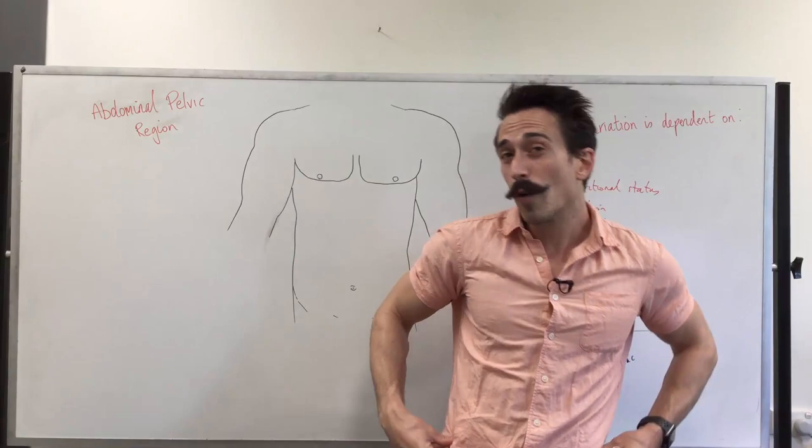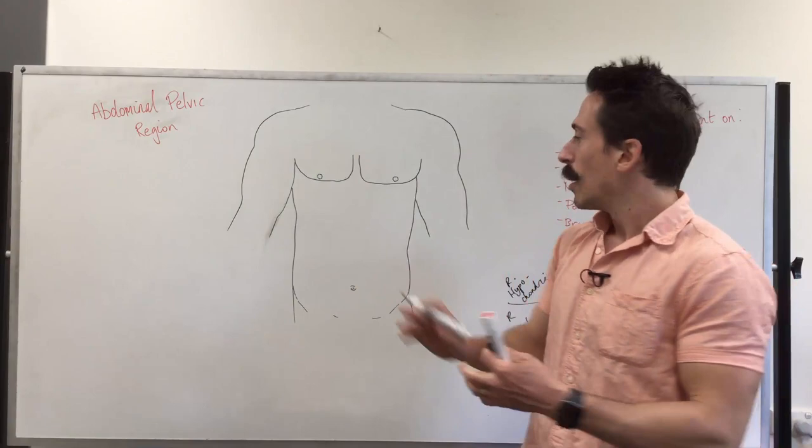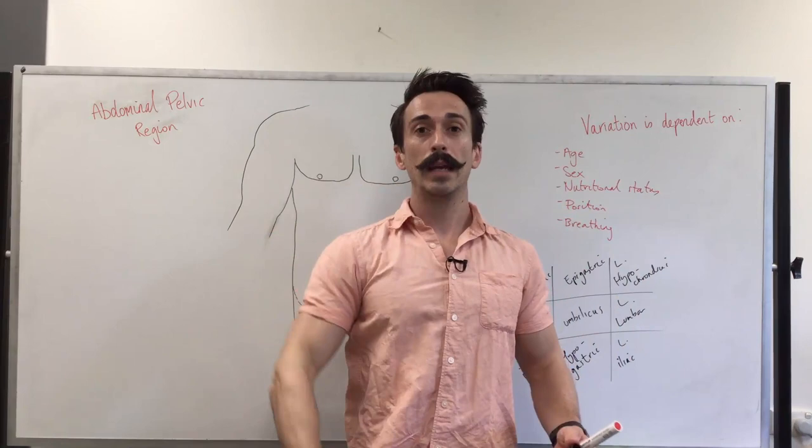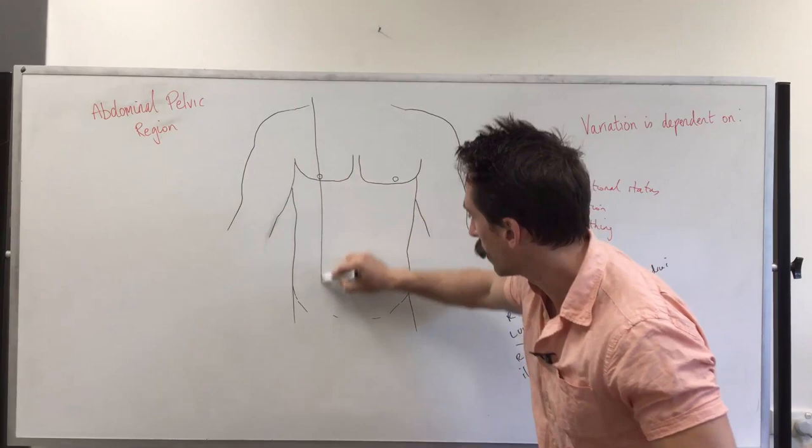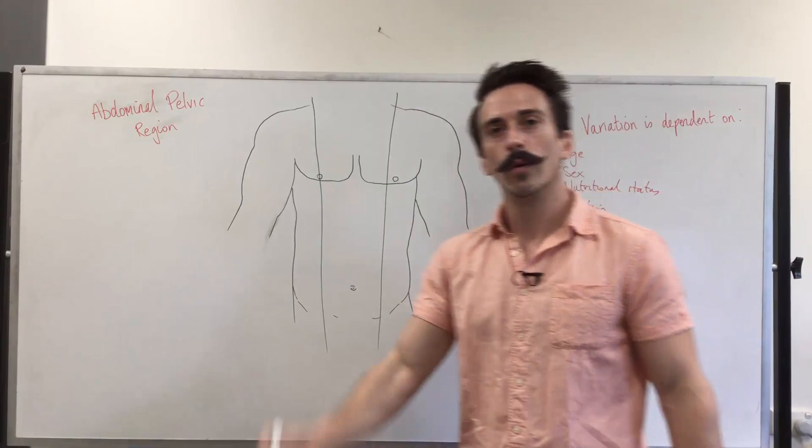Which may be giving you an indication as to the iliac crest potentially of the hip. So they're the nine regions, let's now break it up on this individual. In order to get the two vertical lines, you need to go from midclavicular to midinguinal. So midclavicular to midinguinal, midclavicular to midinguinal.